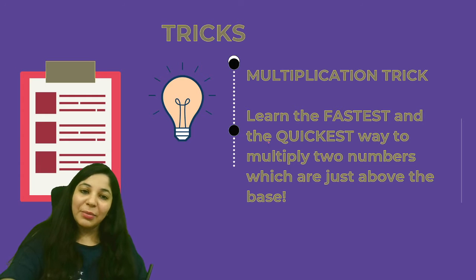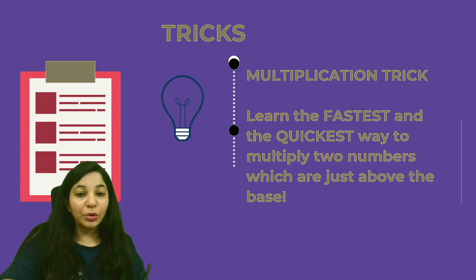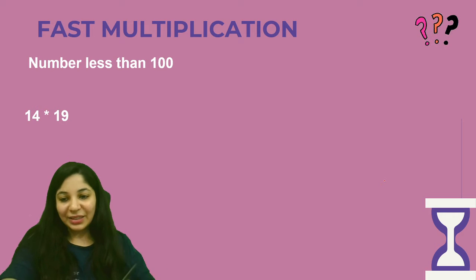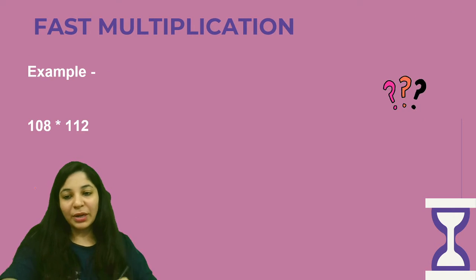So let's get started. This is a multiplication trick which, like I told you, we have to multiply two numbers which are just above the base. Let me give you one example.